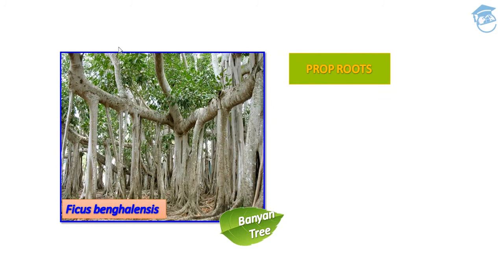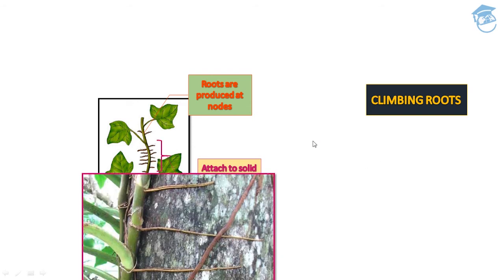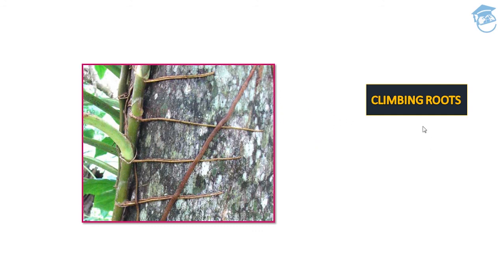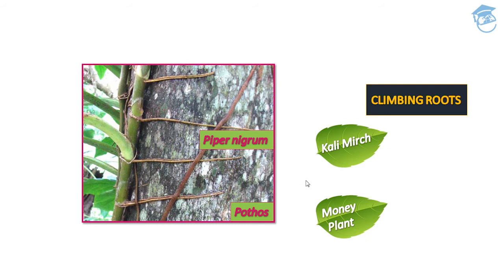This is Ficus benghalensis, which has 1700 prop roots. Another modification is climbing roots. Roots are produced at nodes — from where usually leaves arise — but in this modification of adventitious roots, roots come out from the nodes, attach to a solid support, and climb over it using hook-like structures. It is seen in money plant (Pothos), Piper nigrum (black pepper/kalimirch), and Piper betle (paan).